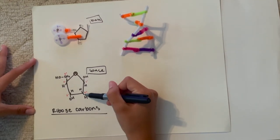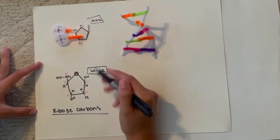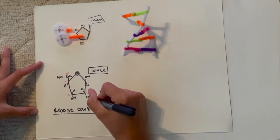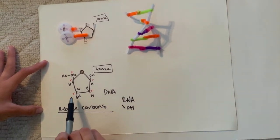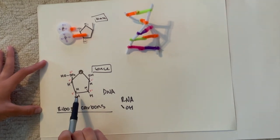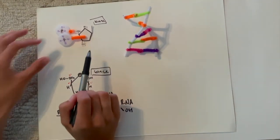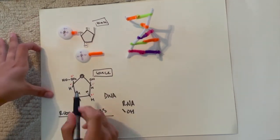The two prime position is significant because in deoxyribose which is DNA it's a H, but in RNA it would be an OH bond there. And then both of them have an OH bond at the three prime position, which is where the other phosphate group comes in and attaches.